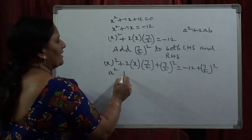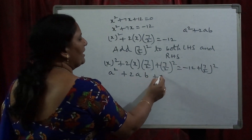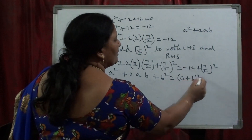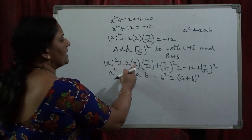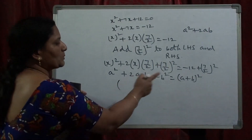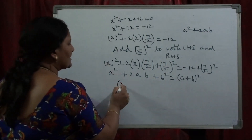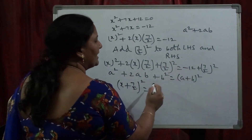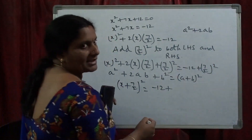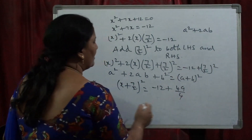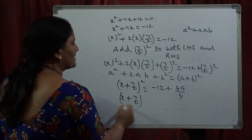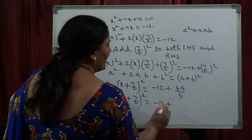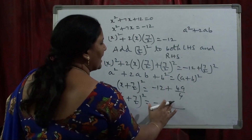LHS is a² + 2ab + b², which is the expansion of (a + b)². Here a is x and b is 7/2, so LHS becomes (x + 7/2)². On the other side, −12 + (7/2)² = −12 + 49/4. Then (x + 7/2)² = −12 + 49/4. Taking LCM, 4 is the LCM.